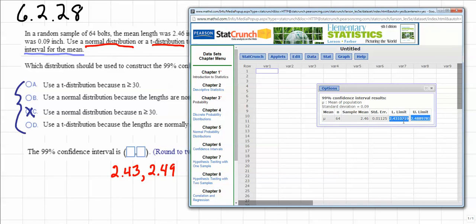Notice that the lower limit is 2.43, 10019, which as I said rounds to 2.43. And then the upper limit is 2.48, 8, 9, 7, 8, 1, which as I said rounds to 2.49.